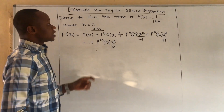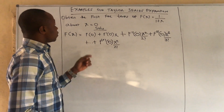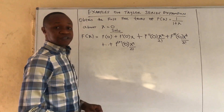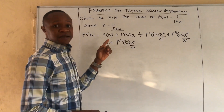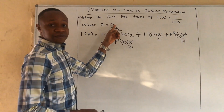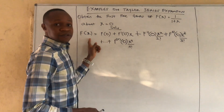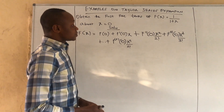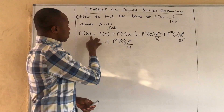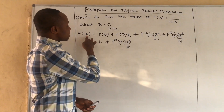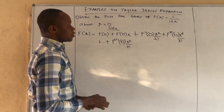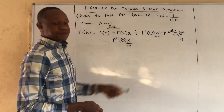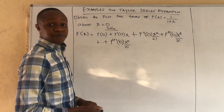We have a question here on Taylor series expansion: obtain the first five terms of the function 1 over 1 plus x about x equal to 0. Now this could also imply Maclaurin series since the center of expansion is 0. According to the Taylor series, the expansion gives us a function in this form where if the center is 0, we replace x with 0 at each derivative. So we use this approach to expand f of x equal to 1 over 1 plus x.